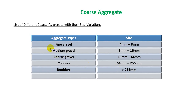Almost three types of aggregate from that list are used for building and structural construction. Medium gravel and coarse gravel are mostly used. Now we will see another types of aggregate.